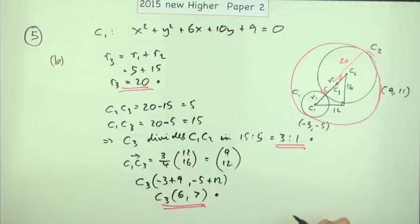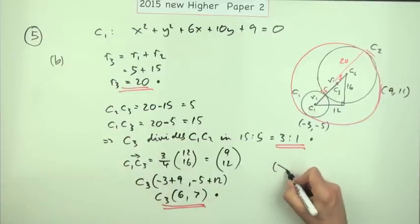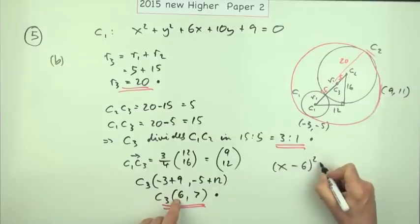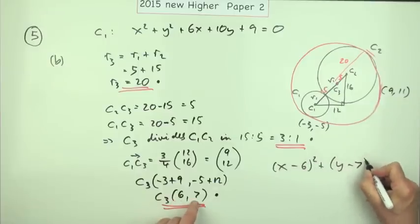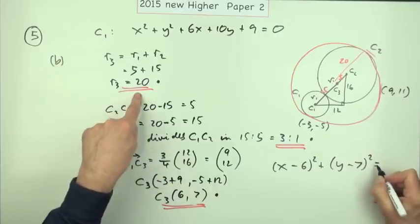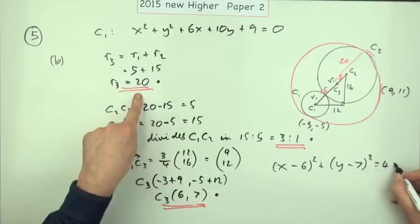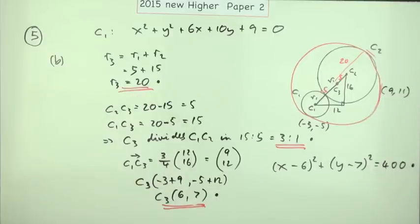And the last mark's just for stating the equation. Now that's the easy bit because you just put these two things together. The equation of the circle is going to be x minus the x coordinate squared, y minus the y coordinate squared is the radius squared. But don't leave it as 20 squared, make it into 400, and that's the fourth mark. Okay.